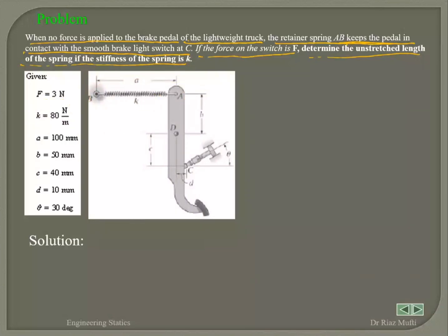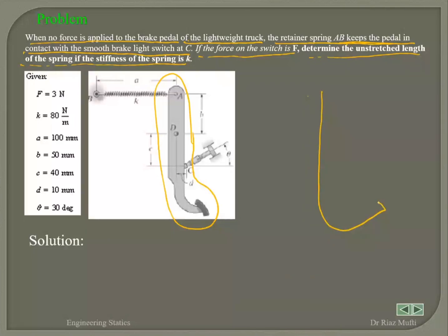Let's see how we're going to create the free body diagram of the brake pedal. I will draw the brake pedal. At A, I've got a spring force. I've also got another force acting at the switch, and that is 3 Newtons. The whole brake pedal is pin-connected and pivoted at D.